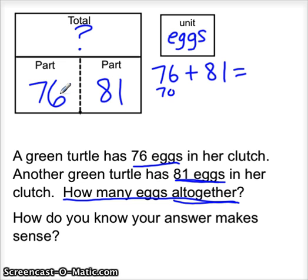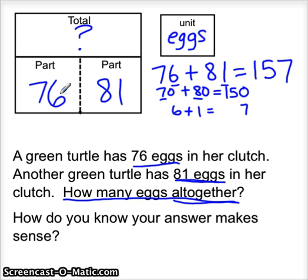On this one, I could add 70 plus 80. This is called the partial sums method, which means we break these numbers into parts. The easy fact here is 7 plus 8, and I know that 7 plus 8 is 15. It's 7 tens plus 8 tens equals 15 tens, or 150. And the parts that are left are 6 plus 1 equals 7. So 150 and 7 is 157. Our total number of eggs is 157.